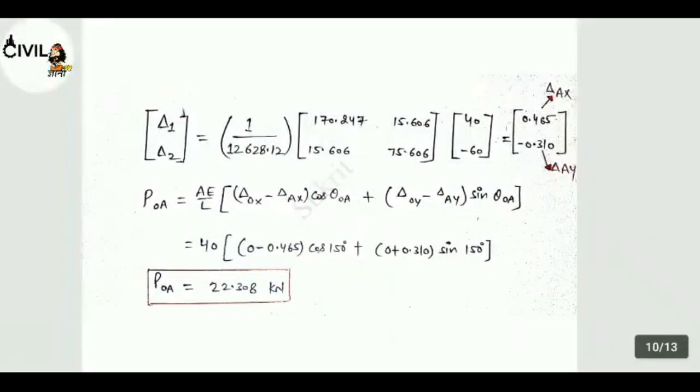So delta 1 and delta 2 values find out: 0.465 and minus 0.310. So this 0.310 is delta AY and 0.465 is delta AX.